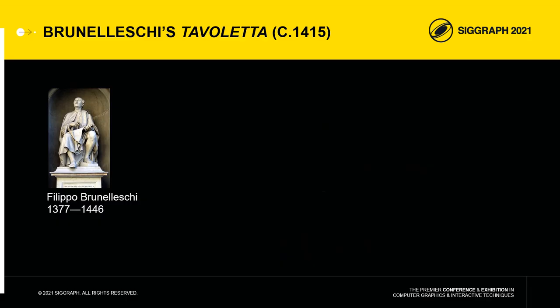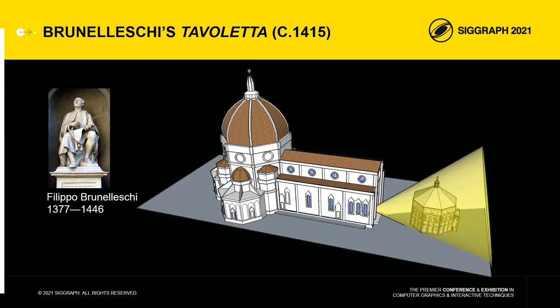The first central perspective representation appeared in Italy in the second quarter of the 15th century under the impulse of the Florentine architect Brunelleschi. According to his biographer Manetti, this man invented around 1415 an optical device called the tavoletta, which made it possible to see a central perspective representation of the Baptistery of San Giovanni seen from the threshold of the Florentine cathedral over the real world.